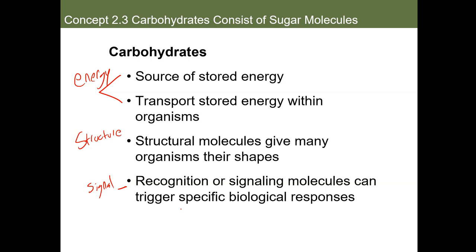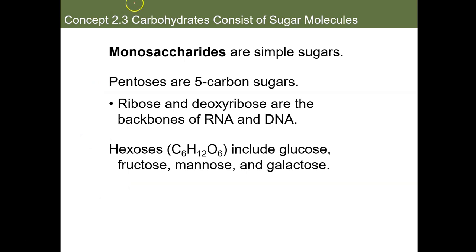Now let's talk about the building blocks of carbohydrates: the monosaccharide. The monosaccharide is our monomer. Not every macromolecule has a true monomer, but monosaccharides are the true monomer of carbs. Monosaccharides are your simple sugars. In AP Biology we talk about two categories: the pentoses and the hexoses. Pentoses are five-carbon sugars. The big ones in this category are ribose and deoxyribose. They are very similar to one another, but their slight difference gives them completely different functions.